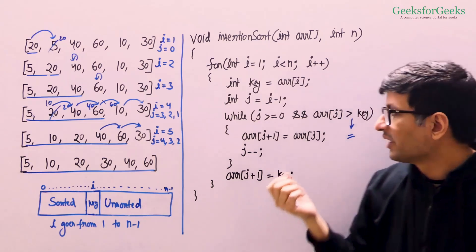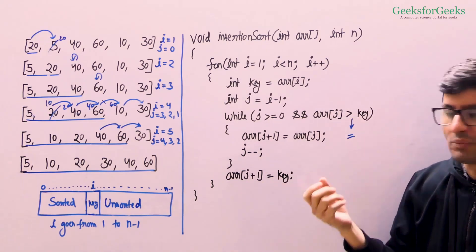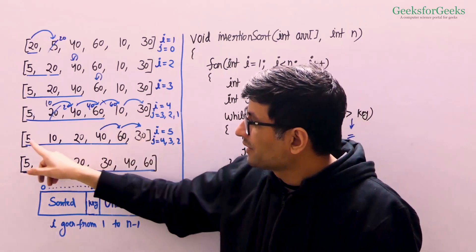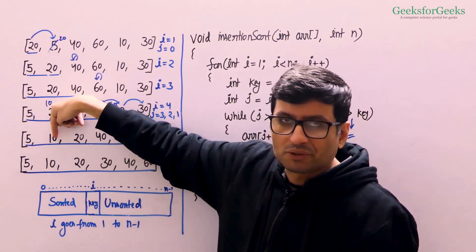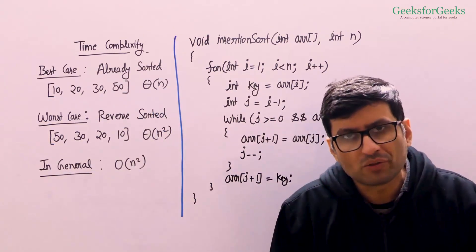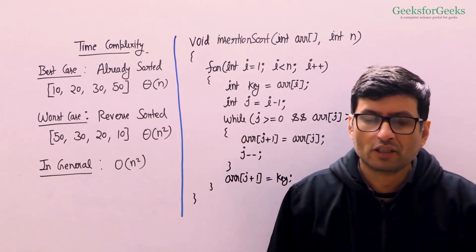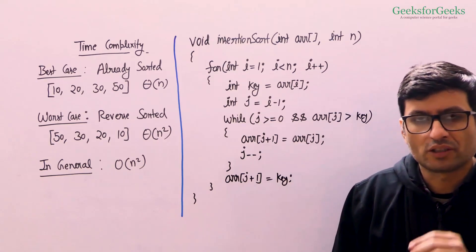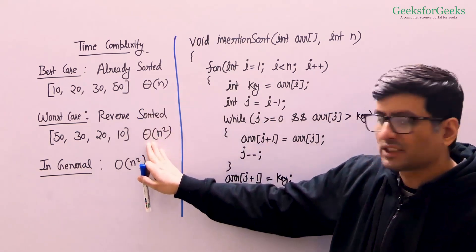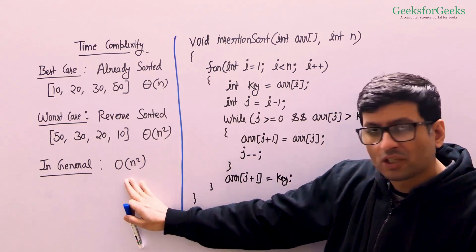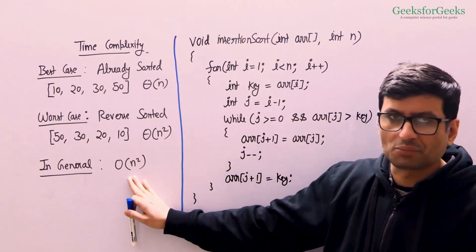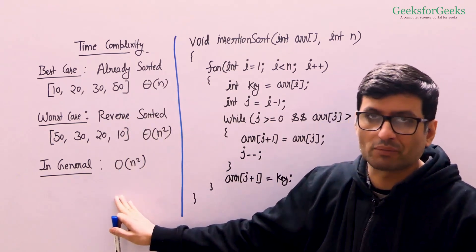That's why we say insertion sort is stable. If we put an equal-to sign, it won't be stable because then the second five would push the first five one position ahead, losing stability. Time complexity of insertion sort in the best case is Θ(n) and in the worst case is Θ(n²). In general we write it as O(n²), which covers both Θ(n²) and Θ(n) since O means upper bound.